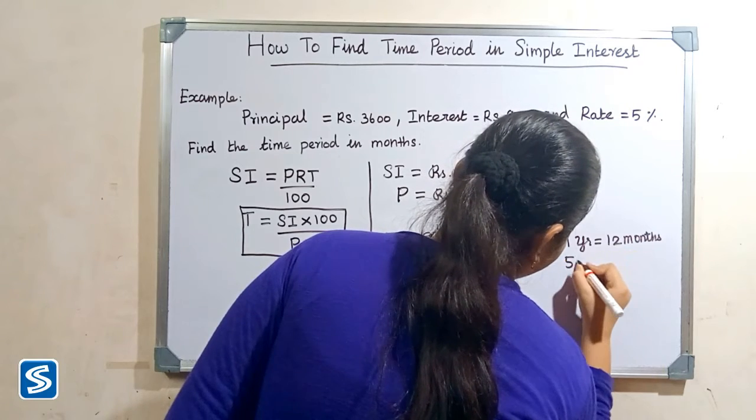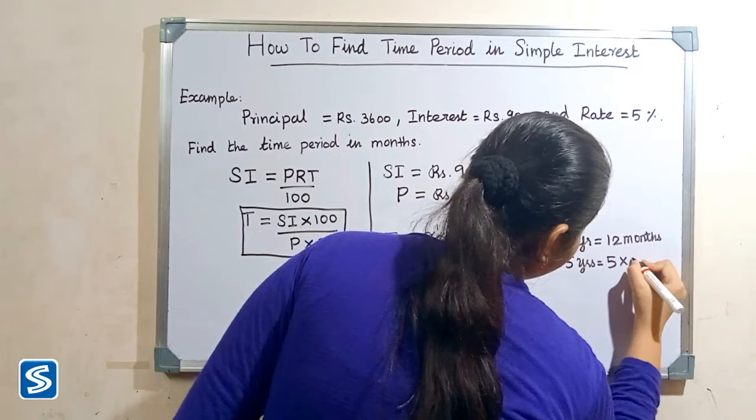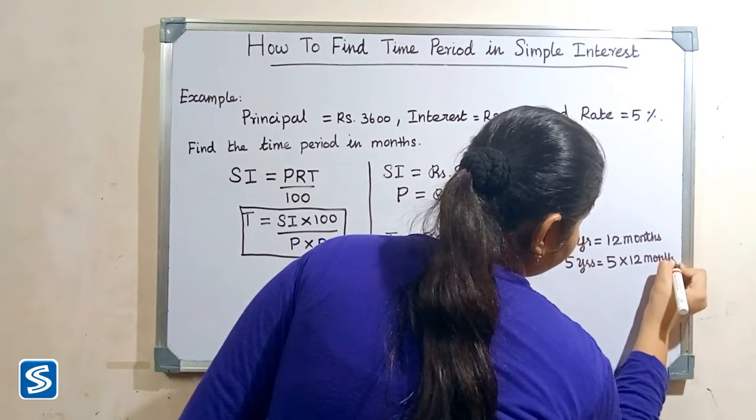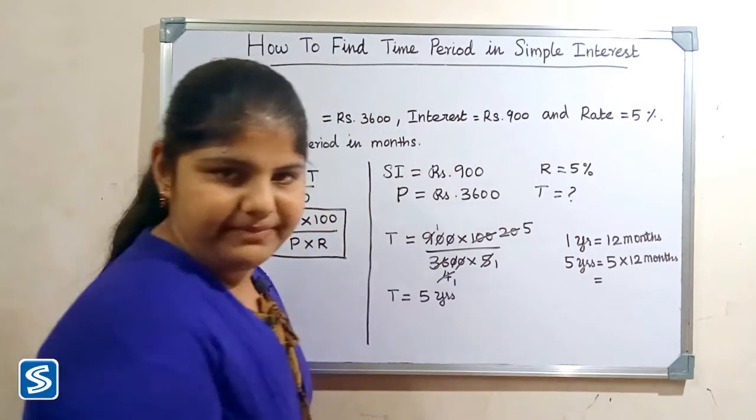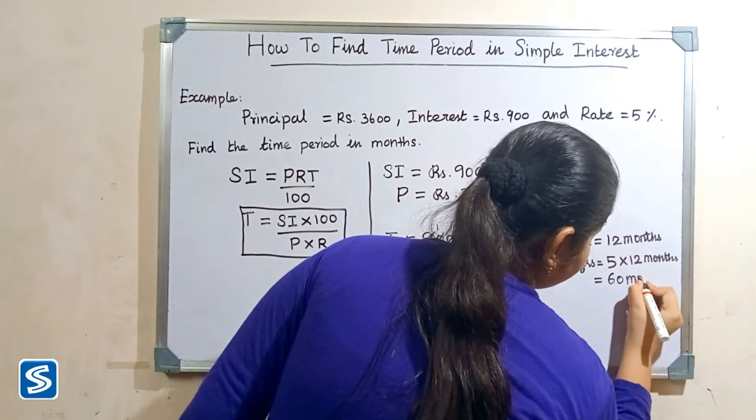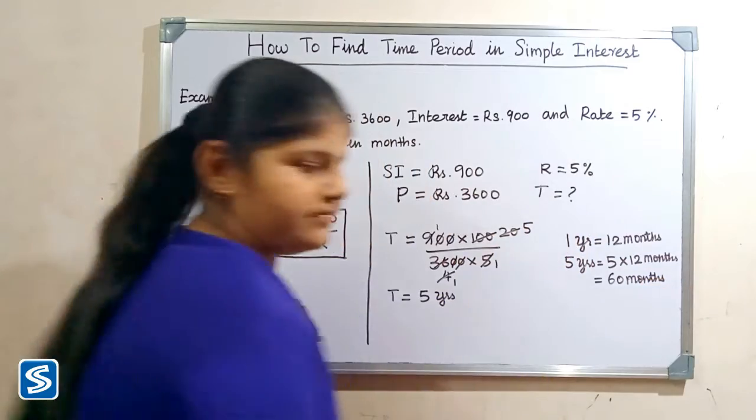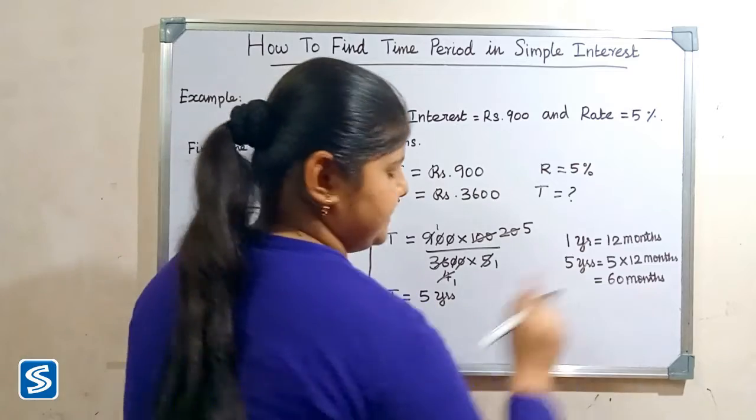So 5 years is equal to 5 multiplied 12 months. 5 multiplied 12 months will be 60 months, so 5 years is equal to 60 months.